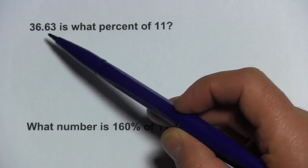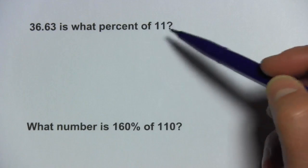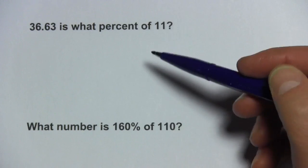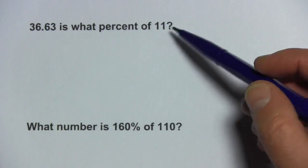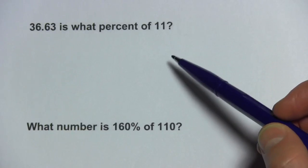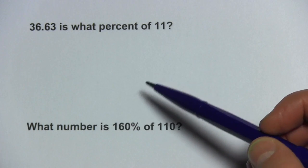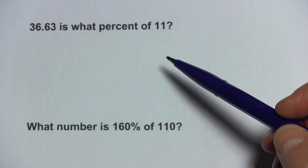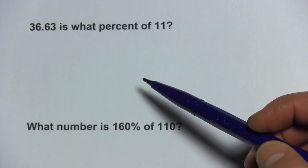Well, let's look at this first one. It says 36.63 is what percent of 11? How are we going to figure this out? It looks like 36.63 is bigger than 11, maybe somewhere around three times bigger. So it's probably going to be an answer somewhere around 300%. I think, but how do we figure this out exactly?